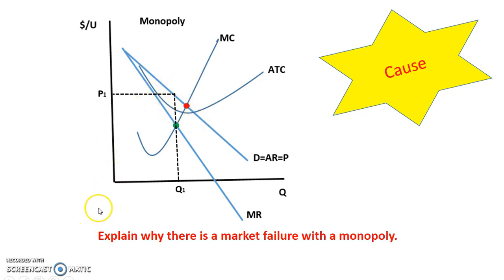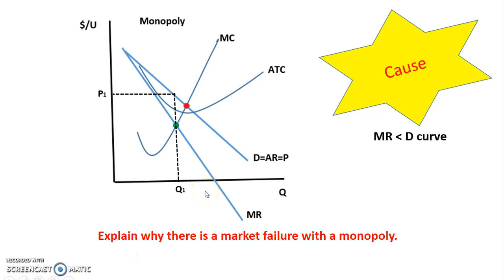So in FRQs or situations like this, be really conscious of what it is that they're asking. In this case, they're asking for the cause, which would be about marginal revenue being less than the demand curve, not about the effect, which is that they're not producing at the socially optimal output. It's always good to not just state what — which would be the effect — but explain why. And the why here is the cause.